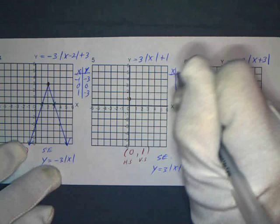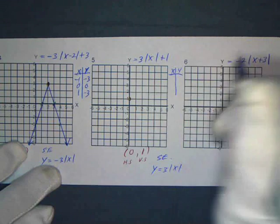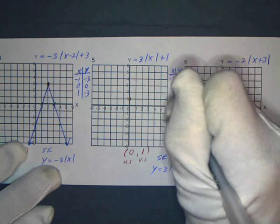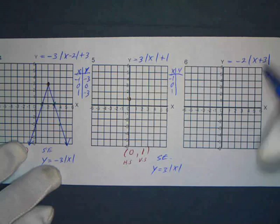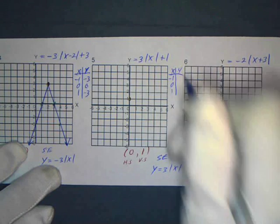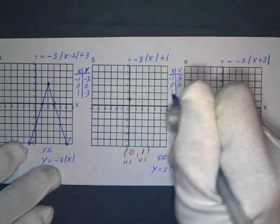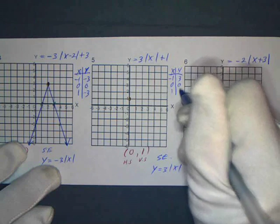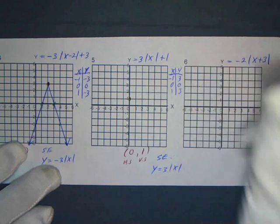We want to see these points, and good old negative one, zero, one again. And the absolute value of negative one is one, times three is three, zero, absolute value of one is one, times three is three, and there you go.